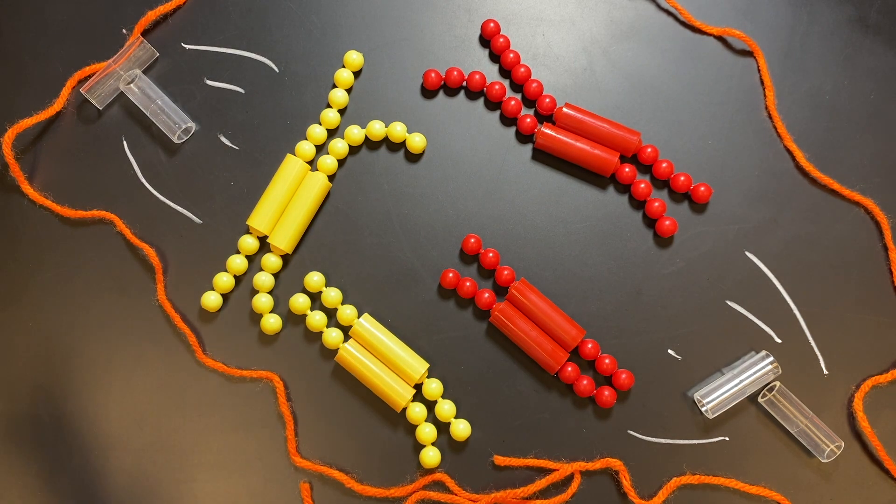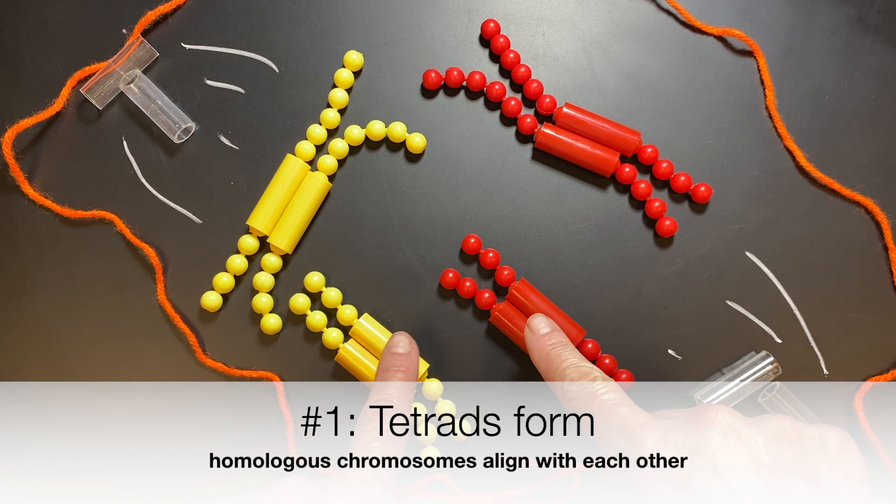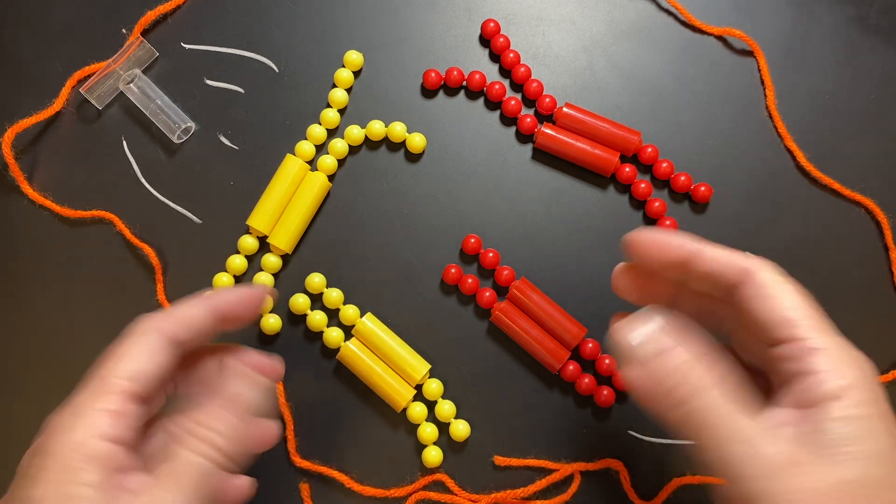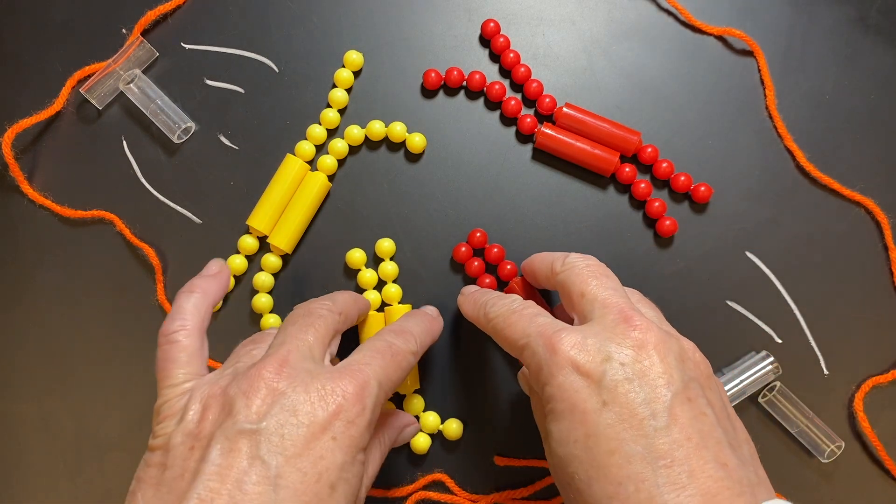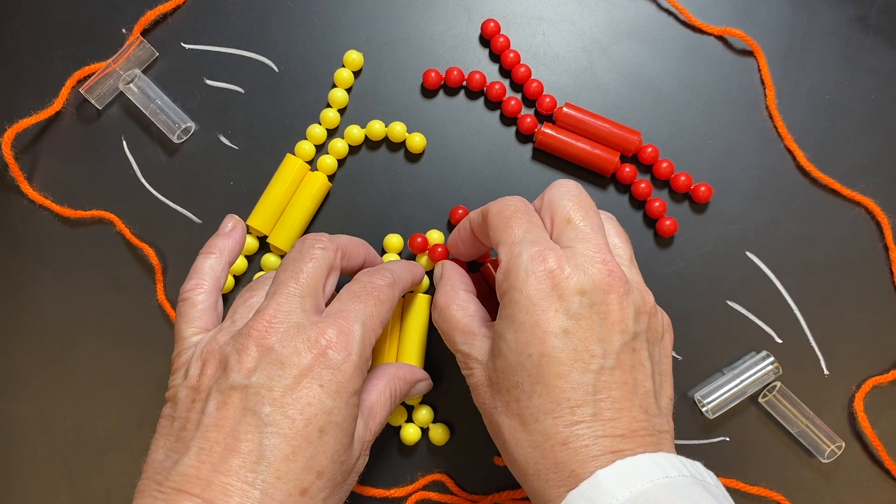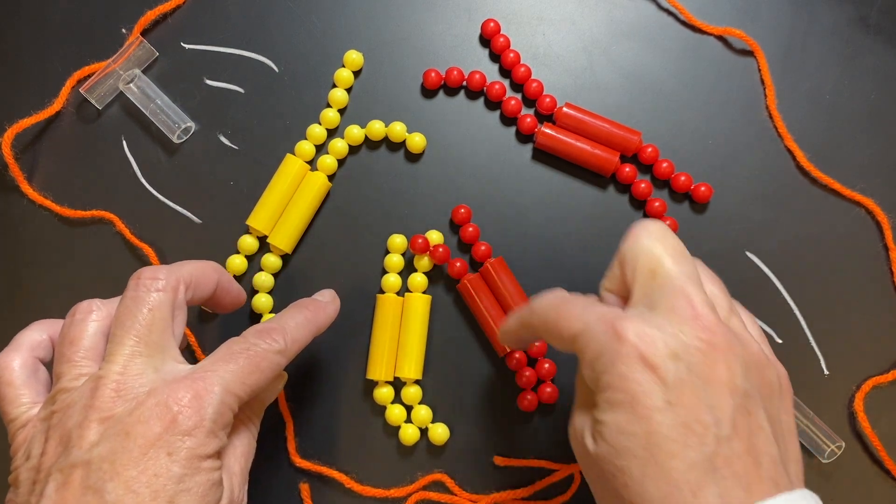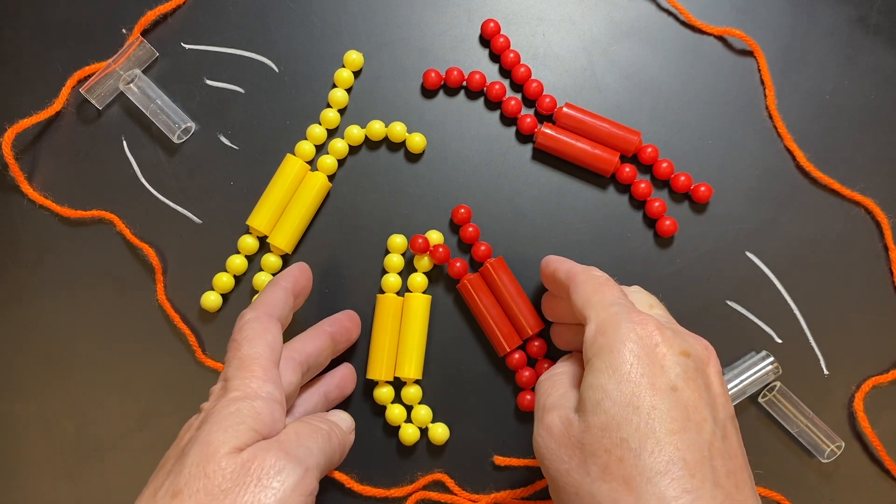But one of the things that is different about meiosis is that tetrads form, and tetrads form between homologous chromosomes. Now in real cells what happens is the homologous chromosomes are pulled together, and then they're pulled together where the areas that are the same gene on a chromosome do this thing called crossing over.